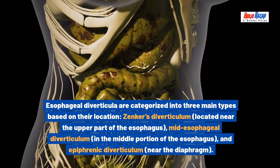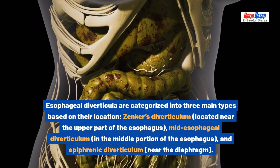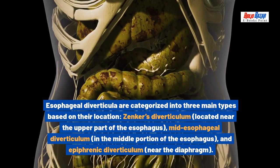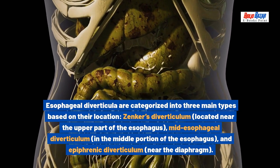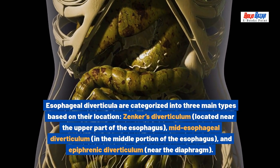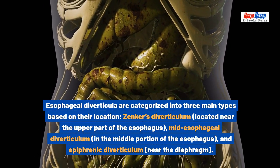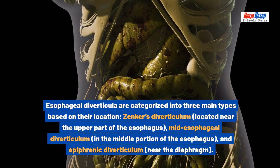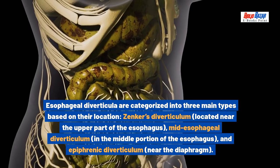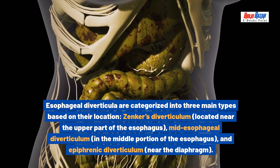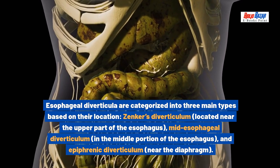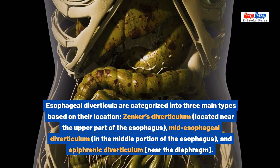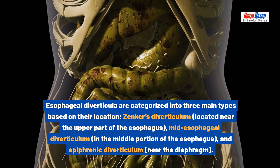Esophageal diverticula are categorized into three main types based on their location: Zenker's diverticulum, located near the upper part of the esophagus; mid-esophageal diverticulum, in the middle portion of the esophagus; and epiphrenic diverticulum, near the diaphragm.